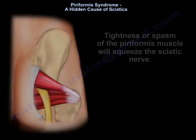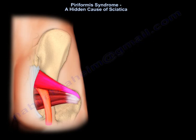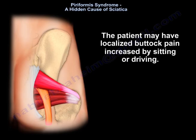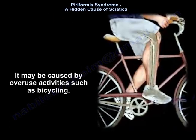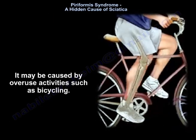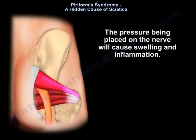Tightness or spasm of the piriformis muscle will squeeze the sciatic nerve. The patient may have localized buttock pain increased by sitting or driving. It may be caused by overuse activities such as bicycling. The pressure placed on the nerve will cause swelling and inflammation.